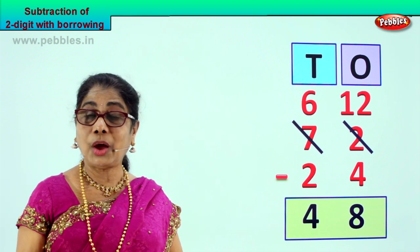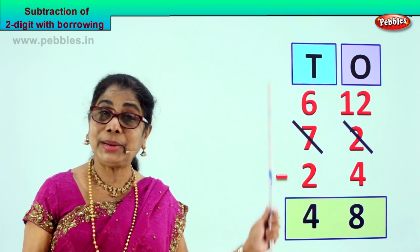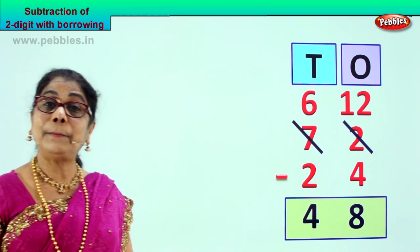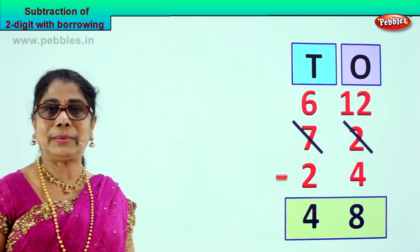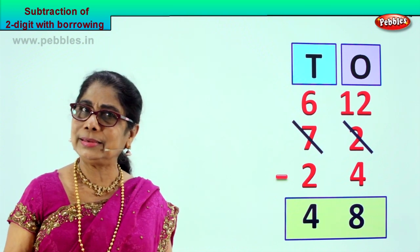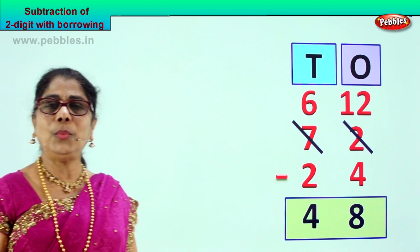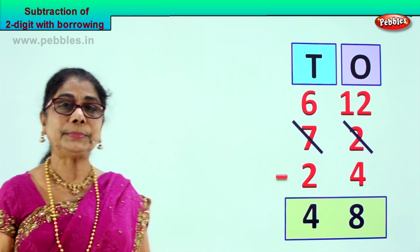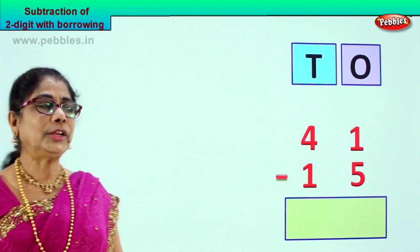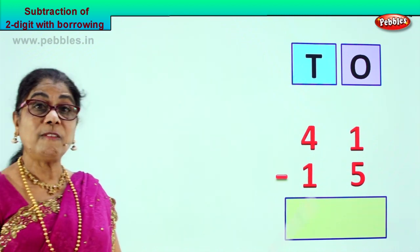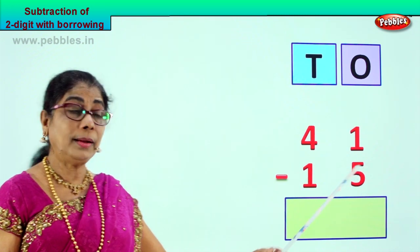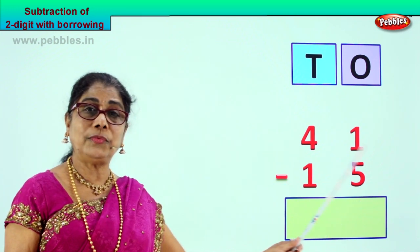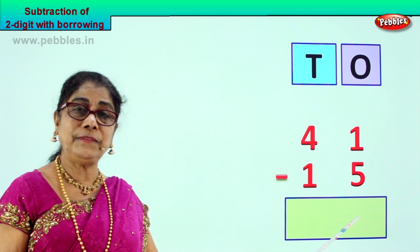Now you learnt how to borrow from the 10's, bring it, and take away the big number from the small number. Shall we go to another exercise? See how we do the borrowing. Look at your sum — 41 minus 15, 41 minus 15.